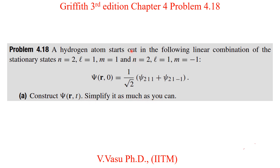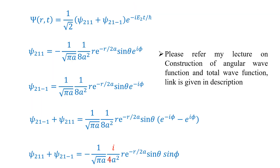This problem contains two parts. The first part asks us to construct Ψ(r,t). The total wave function at time t is given as the linear combination of two wave functions, and we have to incorporate the time part of the equation.